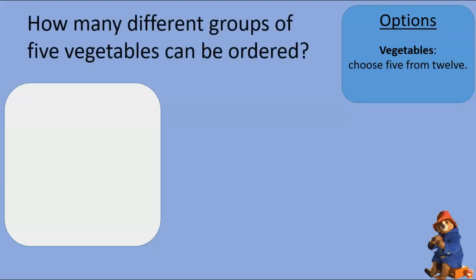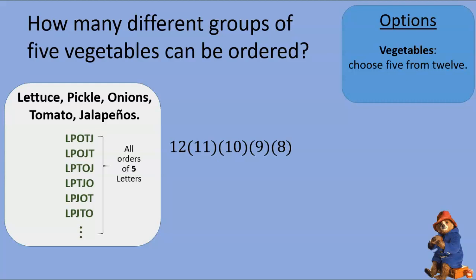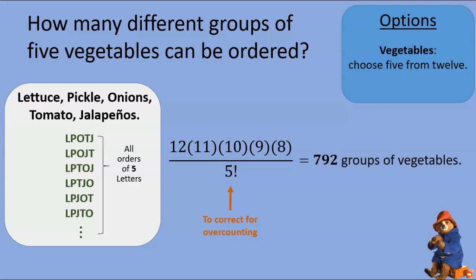Suppose next we must pick five vegetables from a larger group of twelve. Twelve options for the first vegetable and so on. Is this an over-count? Yes — any vegetable quintet such as lettuce, pickle, onions, tomato, and jalapeños will appear many different times on the counting tree, in many different orders. How many different orders? In how many ways can we order five letters L, P, O, T, J? Five factorial, of course. So every group of five appears 5! times, and we divide by 5! to correct, leaving us with seven hundred and ninety-two groups of five vegetables.